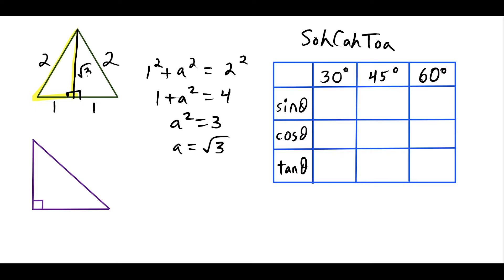We can go ahead and label the altitude. Since it's an equilateral triangle, all the angles are also the same — each is 60 degrees. When I drop down the altitude, it cuts the 60-degree angle in half, giving two 30-degree angles at the top. But we only need one right triangle to help fill out the table.